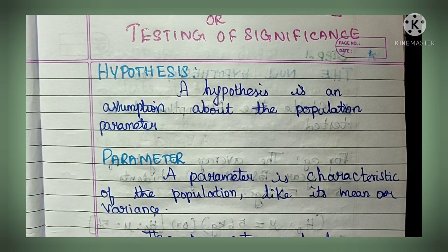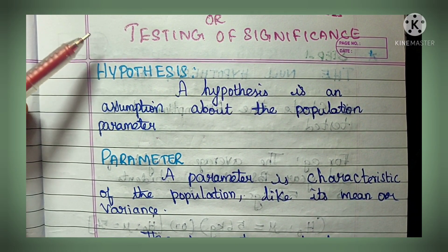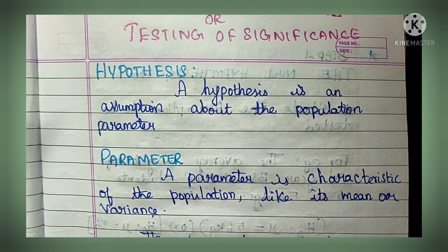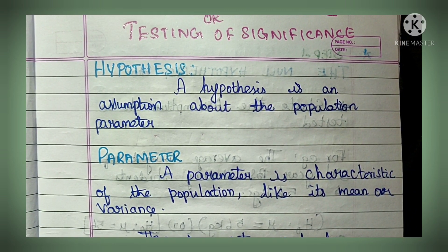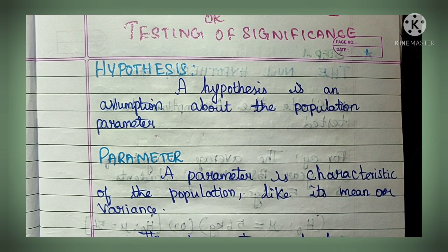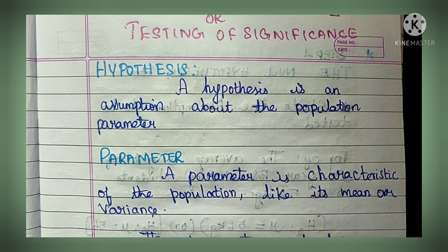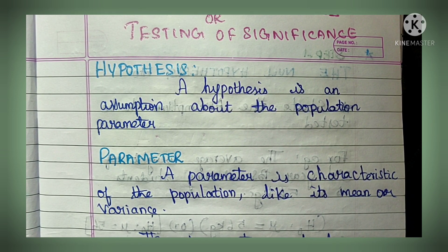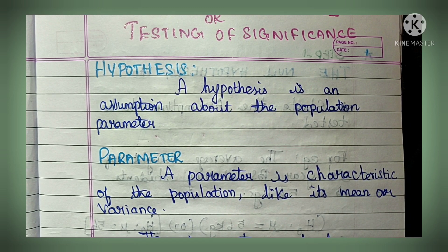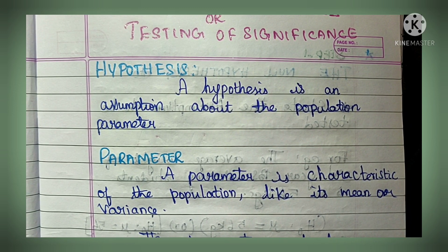Let's move on to the topic - testing of hypothesis or testing of significance. What is a hypothesis? A hypothesis is nothing but an assumption about the population parameter. What is a parameter? A parameter is a defining characteristic of the population, like its mean or variance - either it can be population mean or population variance.